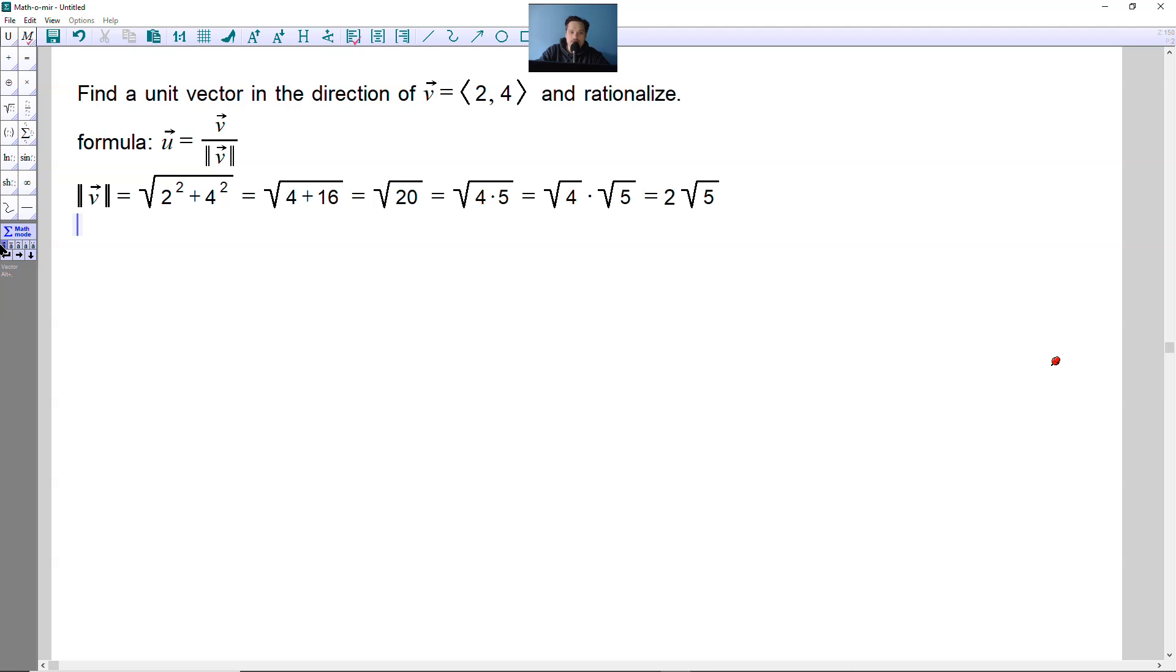Then from here, you can form V divided by the magnitude of V, or U in other words. So U is, remember, V divided by the magnitude of V. It's going to look like the following then.